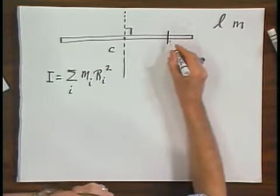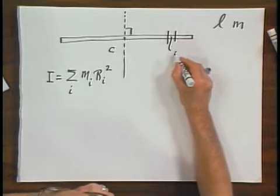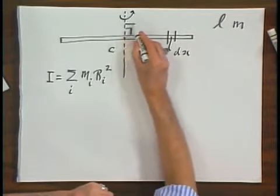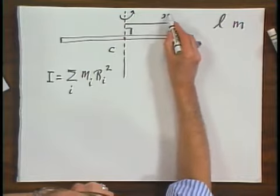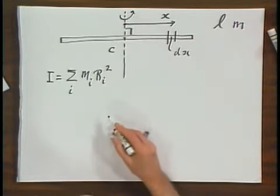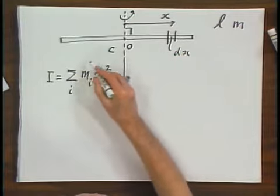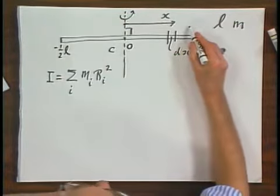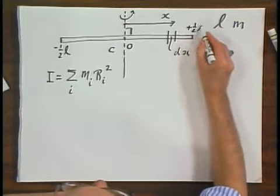I slice out here a small section dx. This is the axis of rotation, and this is at a distance x from the axis of rotation. I call this x equals zero. X would equal minus one half L here, and x equals plus one half L here.